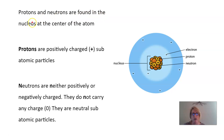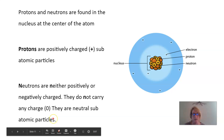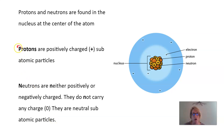Protons and neutrons are found in the nucleus at the center of the atom. In the diagram, the nucleus is at the center — a plus indicates a proton, and a blank or zero indicates a neutron. Protons are positively charged, represented with a plus. Neutrons are neither positively nor negatively charged — they do not carry any charge and are neutral sub-atomic particles.